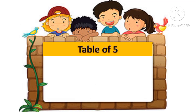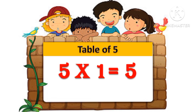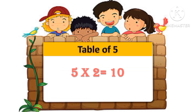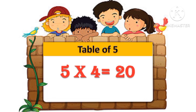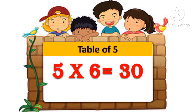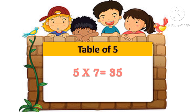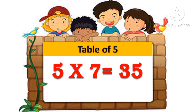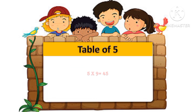Table of 5. 5 1s are 5. 5 2s are 10. 5 3s are 15. 5 4s are 20. 5 5s are 25. 5 6s are 30. 5 7s are 35. 5 8s are 40. 5 9s are 45. 5 10s are 50.